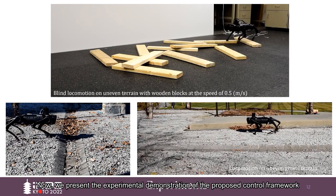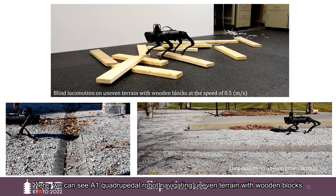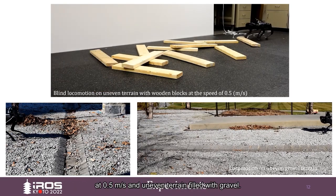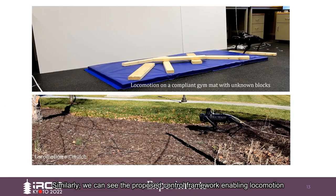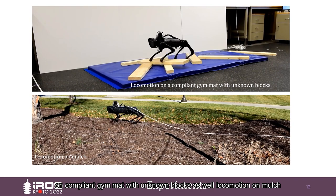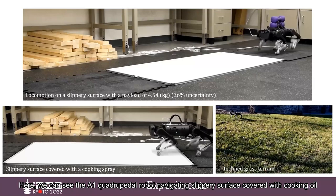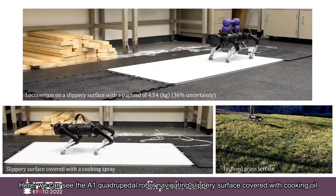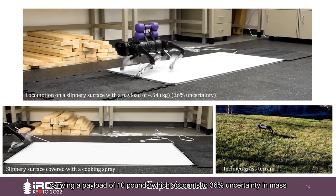Now, we present the experimental demonstration of the proposed control framework. Here, we can see the A1 quadrupedal robot navigating uneven terrain with wooden blocks at half a meter per second and uneven terrain filled with gravel. Similarly, we can see the proposed control framework enabling locomotion on compliant gym mat with unknown blocks, as well as locomotion on mulch. Here, we can see the A1 quadrupedal robot navigating slippery surface covered with cooking oil and carrying a payload of 10 pounds, which accounts to 36% uncertainty in mass.